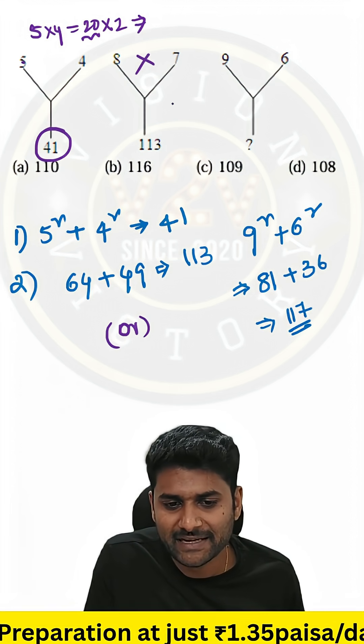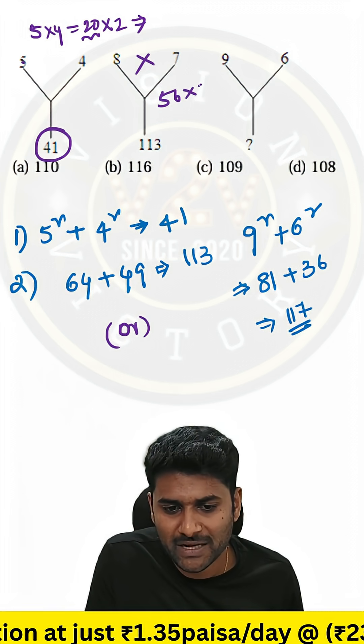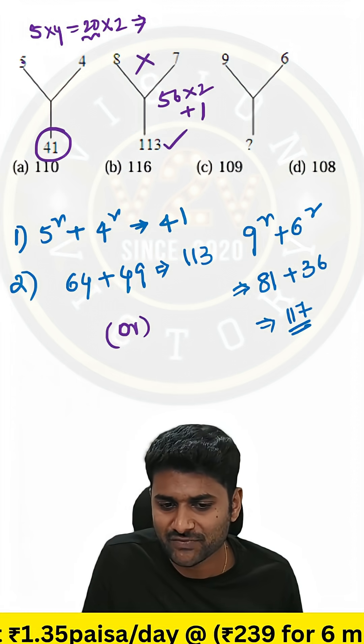Same way, 8 into 7 is 56 multiplied by 2 plus 1. You will get the resultant is 113.